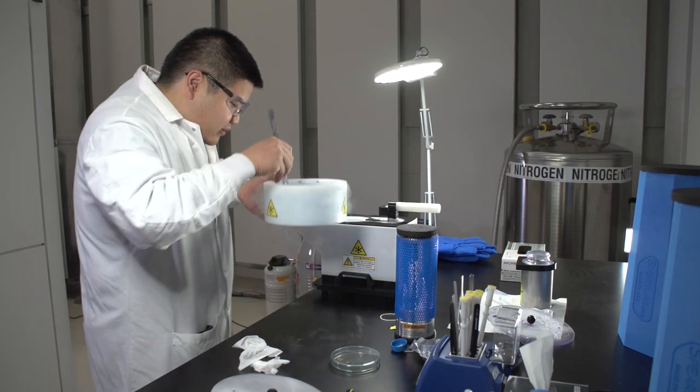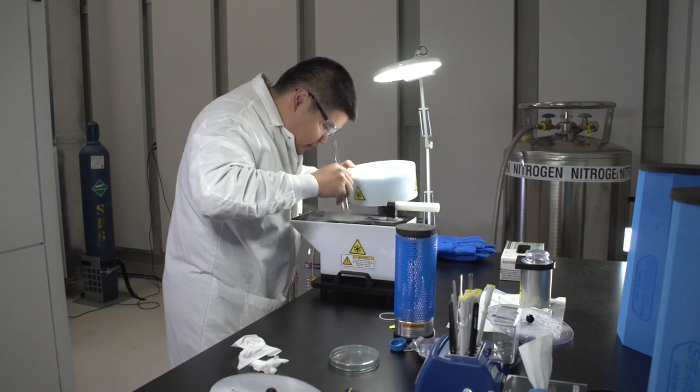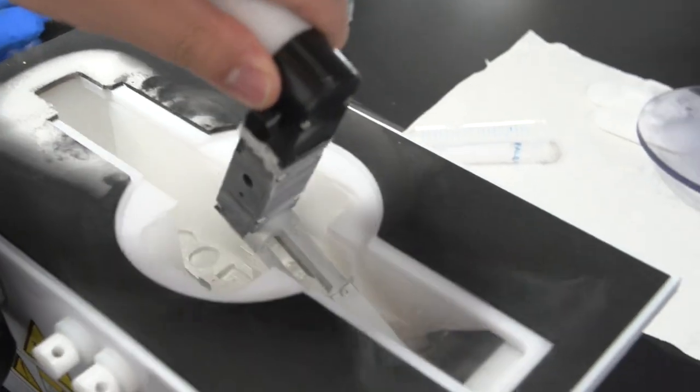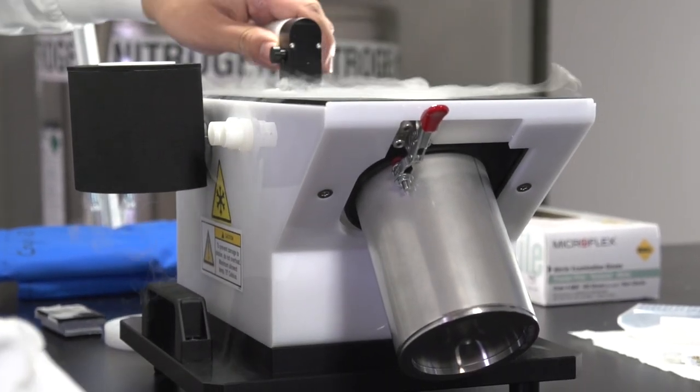Several cartridges are then loaded into a special cassette. Up to 12 grids can be loaded at a time. The cassette is inserted into a cryogenic container that is used to shuttle it into the microscope autoloader.